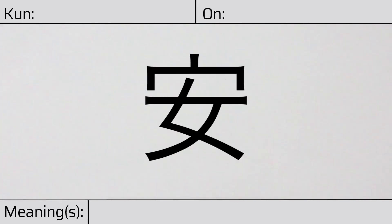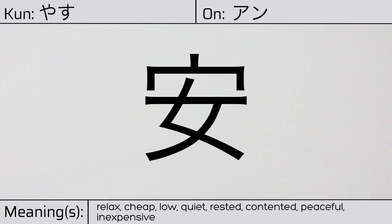Welcome to this lesson on Japanese kanji. Today, we'll be discussing this character. This kanji has a kunyomi, or Japanese reading of yasu. And it has an onyomi, or Chinese reading of an. This character has the meanings relax, cheap, low, quiet, rested, contented, peaceful, or inexpensive.